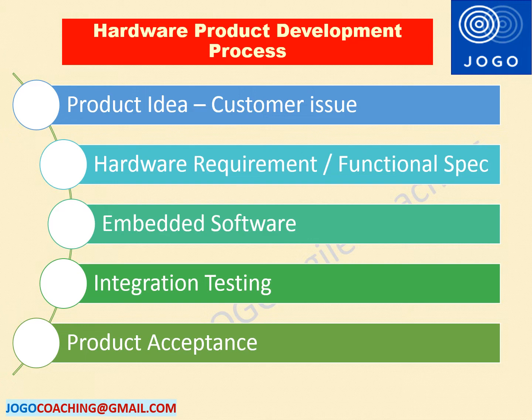The fourth step followed in the hardware development process is doing integration testing for both hardware and software. In this step, hardware, software interfaces, and embedded software will be tested for end-to-end functionality. The fifth step is doing the product acceptance test by the quality department, key stakeholders, and potential customers. These are all the steps followed in hardware product development.